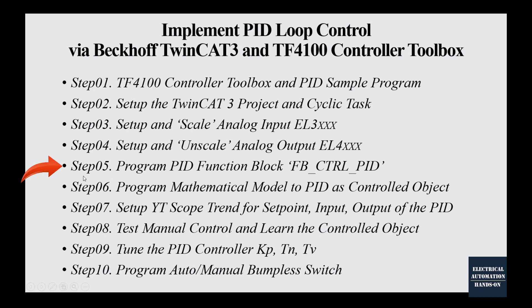In step 5, I will introduce how to program the PID function block named FB_CONTROL_PID. In step 6, I will use a second-order overdamped transfer function as a controlled object connected to this PID function block, so we do not need actual hardware or an actual process object to do this test. We can use only the computer system and this simulated object. By step 6, we basically have the whole control loop set up.